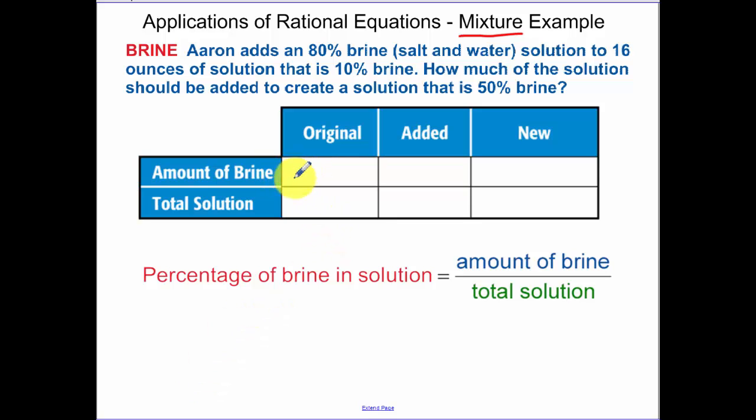We have the amount of brine. In our original solution, 10% of our 16 ounces is our brine. We added 80%, and I don't know how much I've added. So our new solution is the combination of those, or the sum of those, because I took our original and what we added to make a new solution.